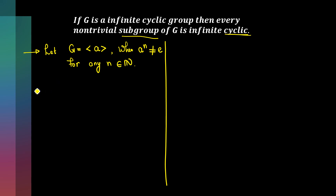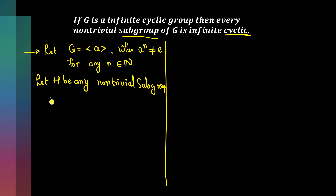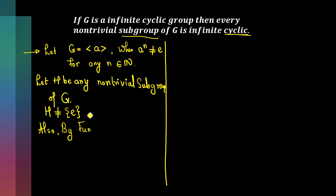Now let H be any non-trivial subgroup of G. Since it is non-trivial, H is not just the singleton containing the identity. Also, by the fundamental theorem of cyclic groups — as proved in the previous video — H must be a cyclic group.